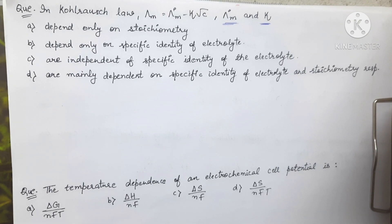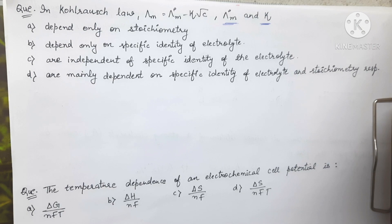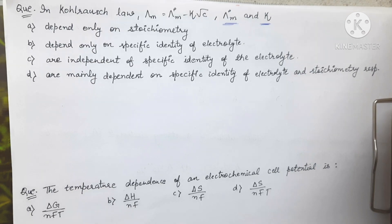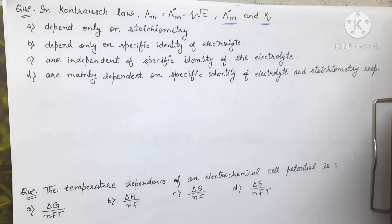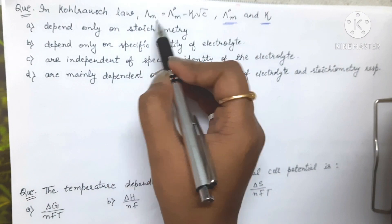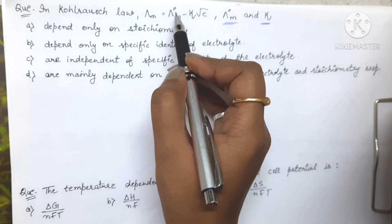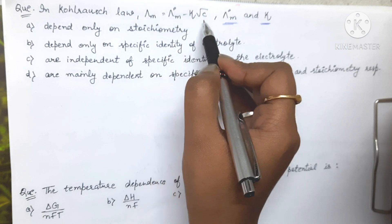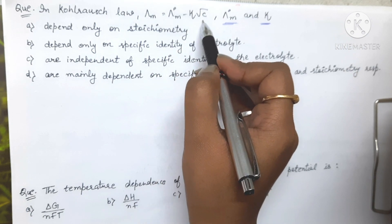Hi everyone, welcome to Netgate Chemistry. Today we are going to solve two questions of the electrochemistry topic which are being asked in the CSIR NET exams. The first question says that in Kohlrausch's law, λm = λ°m − κ√c.